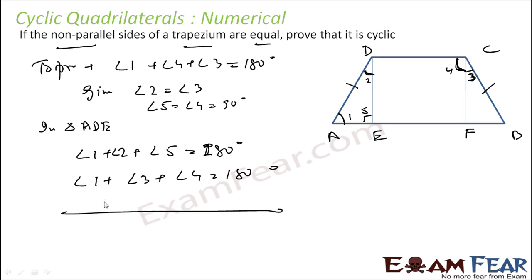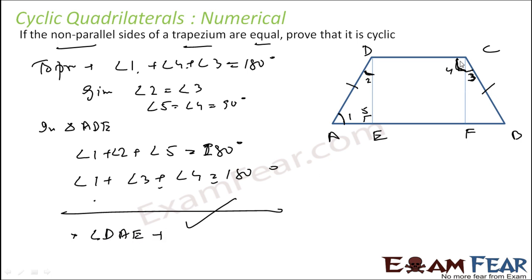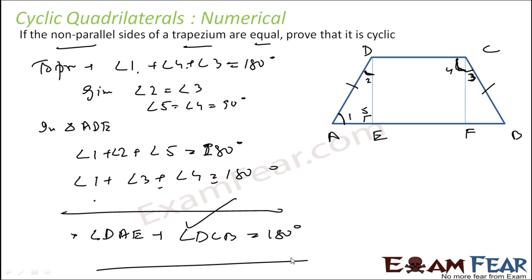Angle 1 plus angle 3 plus angle 4 equals 180 degrees. So I can say that angle 1, which is angle DAE, plus angle 3 plus angle 4 — this whole angle, that is angle DCB — equals 180 degrees. And that is the property of a cyclic quadrilateral — the opposite angles sum to 180 degrees.